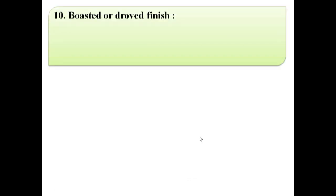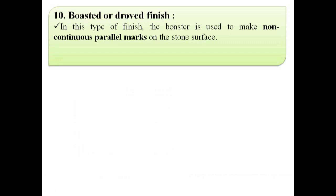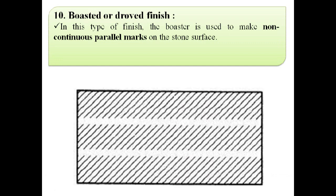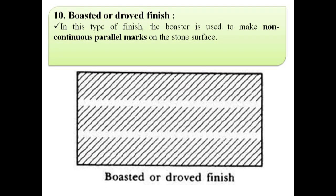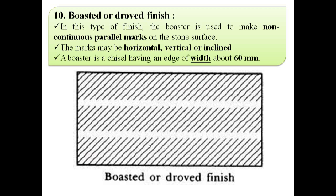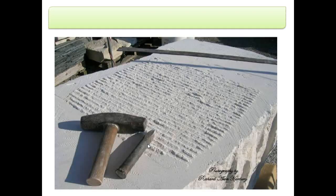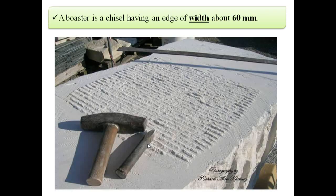The next finish is boasted or draught finish. In this type of finish, a boaster is used to make non-continuous parallel marks on the stone surface. The marks may be horizontal, vertical, or inclined, as shown in this image. A boaster is a chisel having an edge width of about 60 mm.